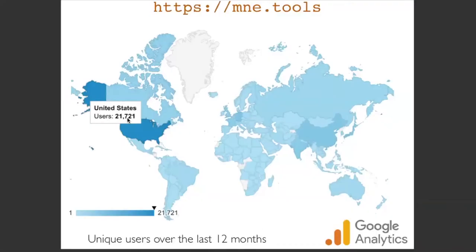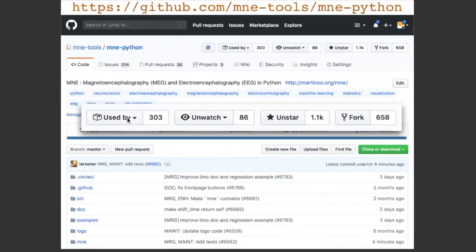MNE has users pretty much everywhere in the world. The US is clearly where we have the most website visits. The number of unique users over the last 12 months is around 20,000 — smaller than scikit-learn's nearly half a million, but the potential user base in neuroimaging is much smaller. We need to sell more MEG and EEG systems, or perhaps rename it to something like 'brain data science.'